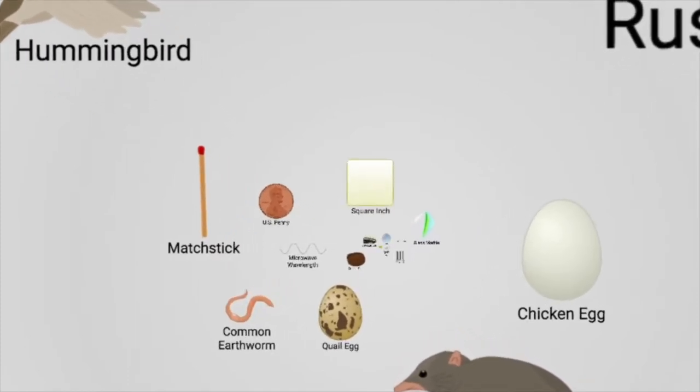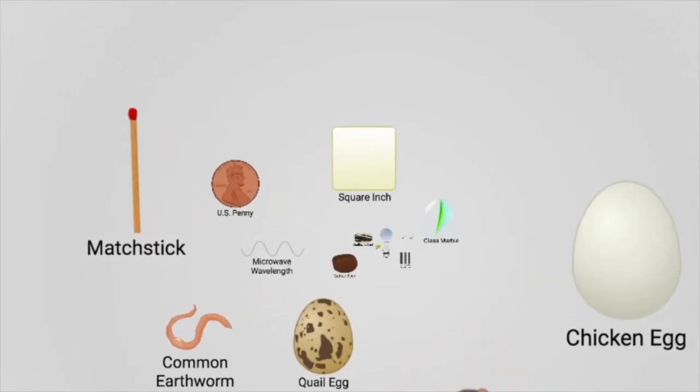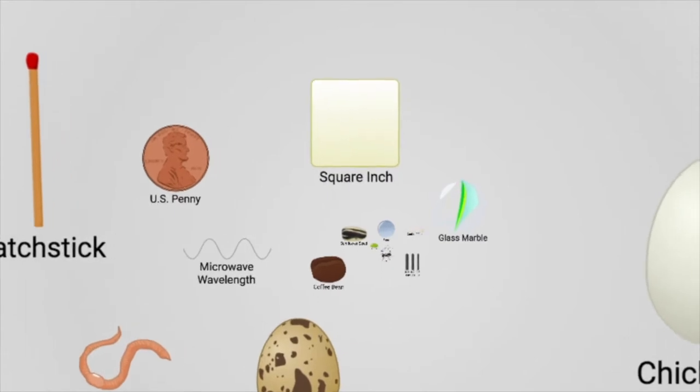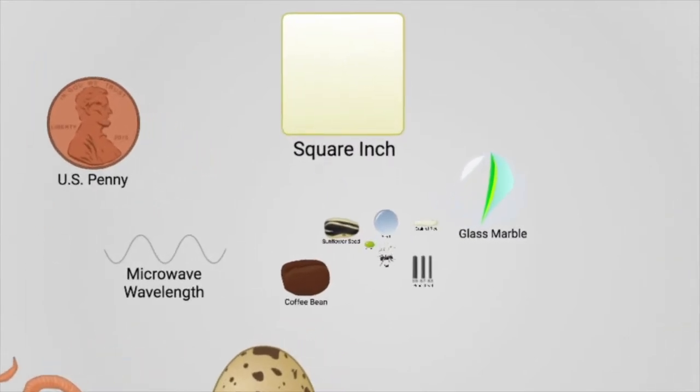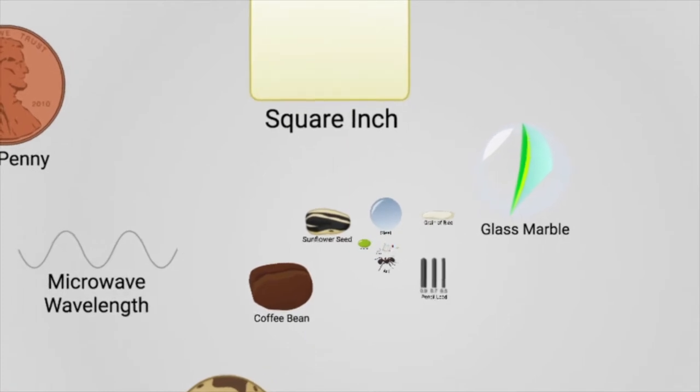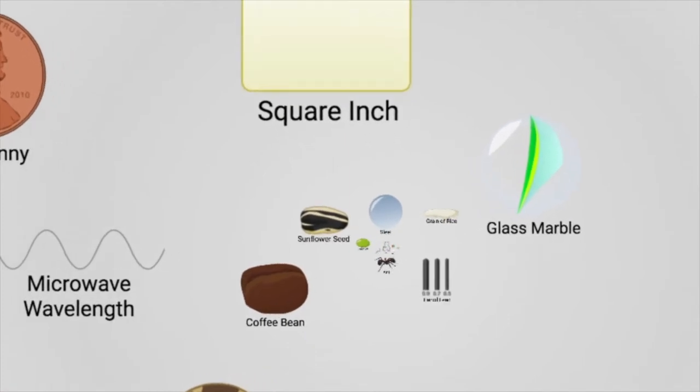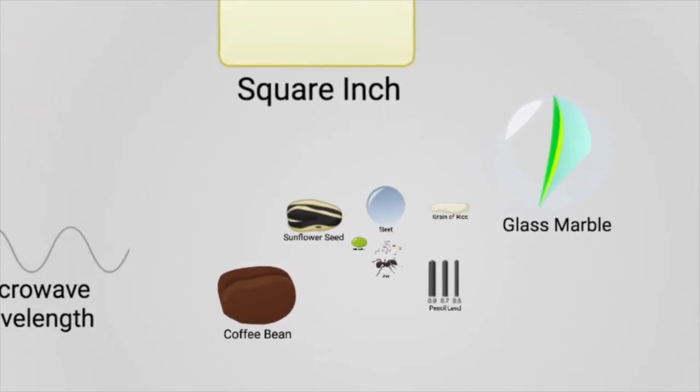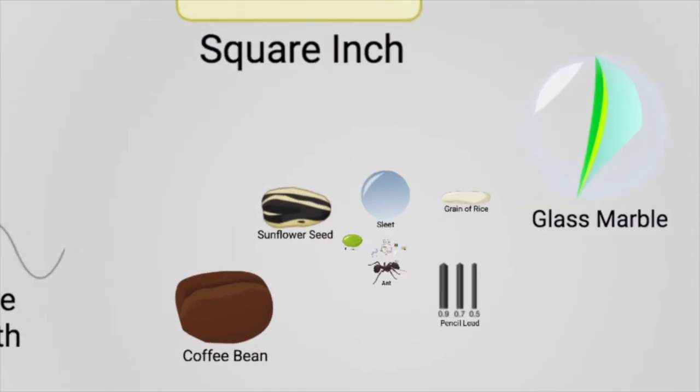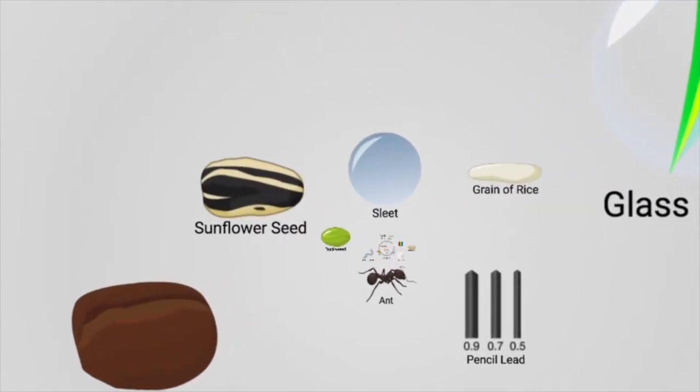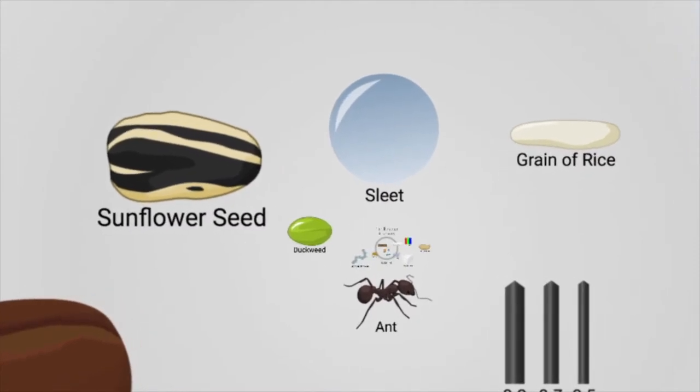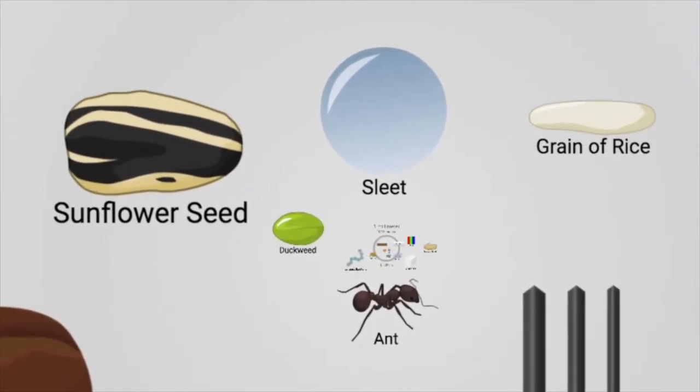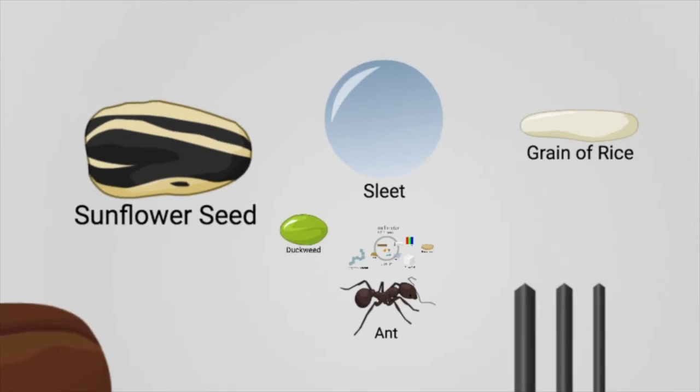We continue to zoom in further, finding ourselves in a smaller realm. On the left, you'll notice the U.S. penny, at the bottom the coffee bean, and a glass marble to the right. Upon closer investigation, we are approaching items that are very small. You'll notice at the right-hand corner a grain of rice, at the top a single bead of sleet, and at the bottom our standard ant.